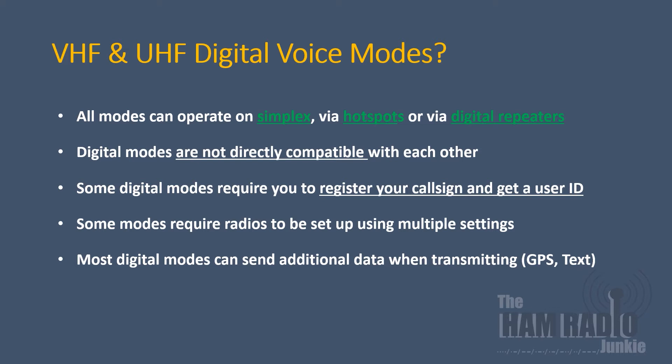The most noticeable difference between digital and analogue modes is that in digital modes, you can use hotspots and digital repeaters. Digital modes are not directly compatible with each other, which requires some form of bridging. Some digital modes also require you to register your callsign and get a user ID before you're able to access the network. And also, some modes require the radio to be set up using quite complex systems as part of what's known as a code plug. Most digital modes can send additional data such as GPS, text or greeting messages.